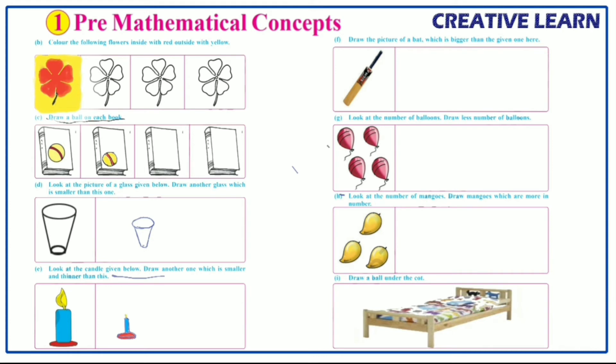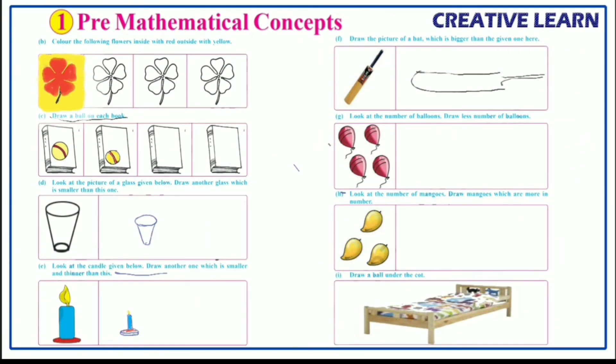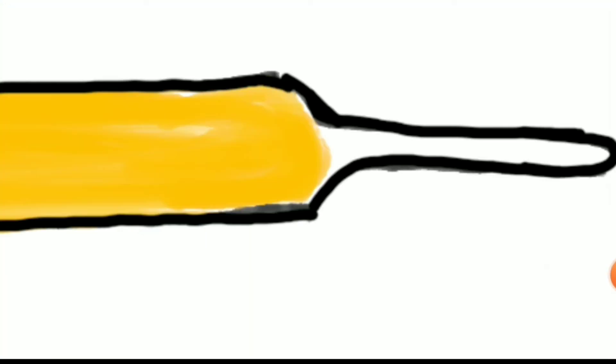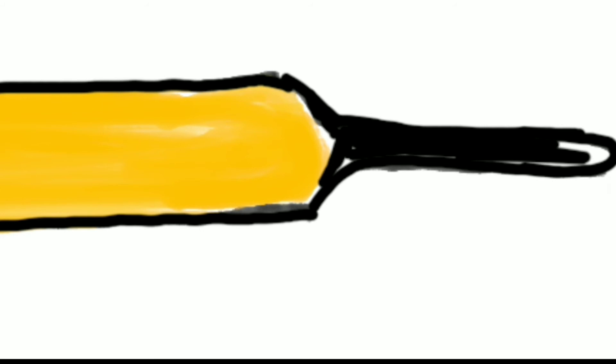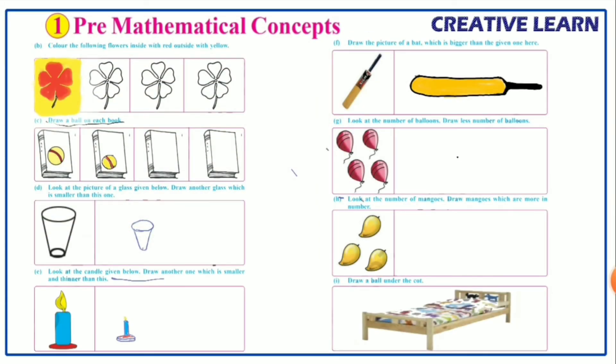Draw the picture of a bat which is bigger than the given one. Here one bat is given — we have to draw a bigger bat compared to the given one. Let's draw.